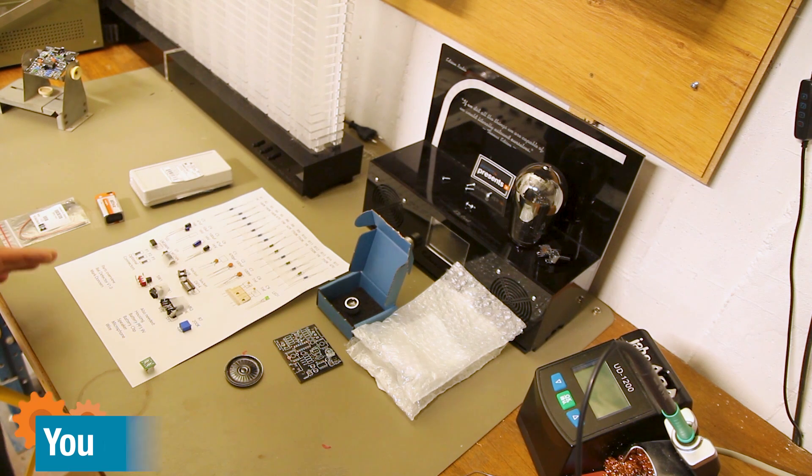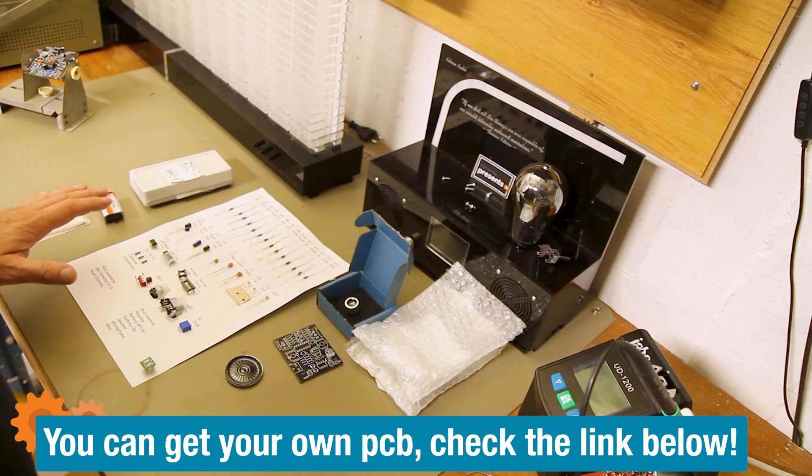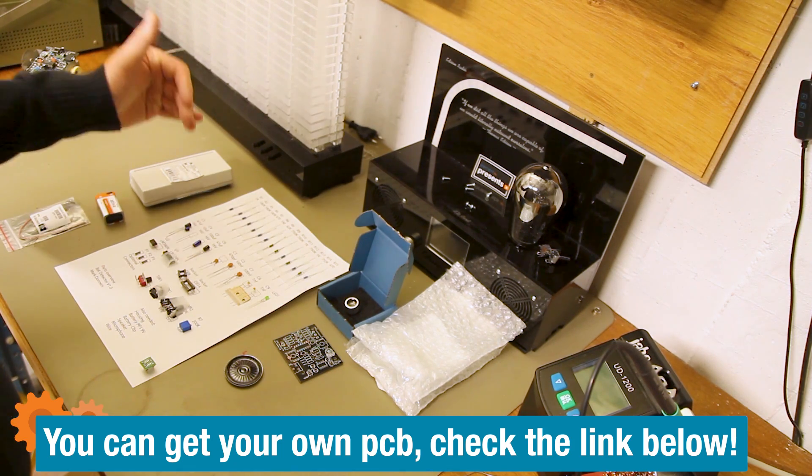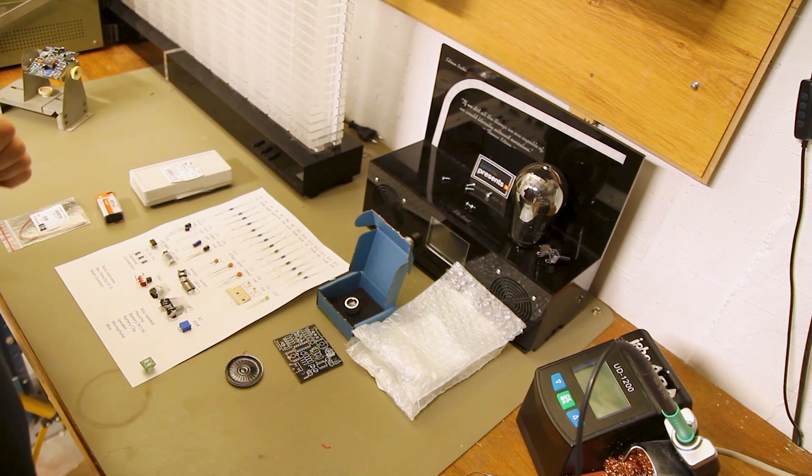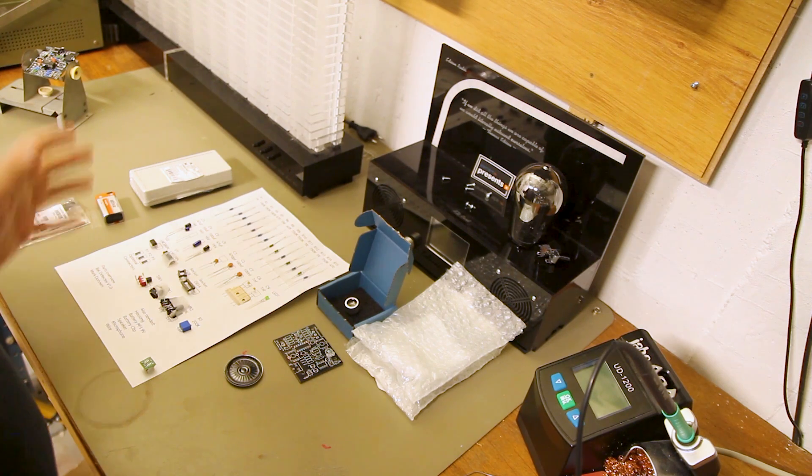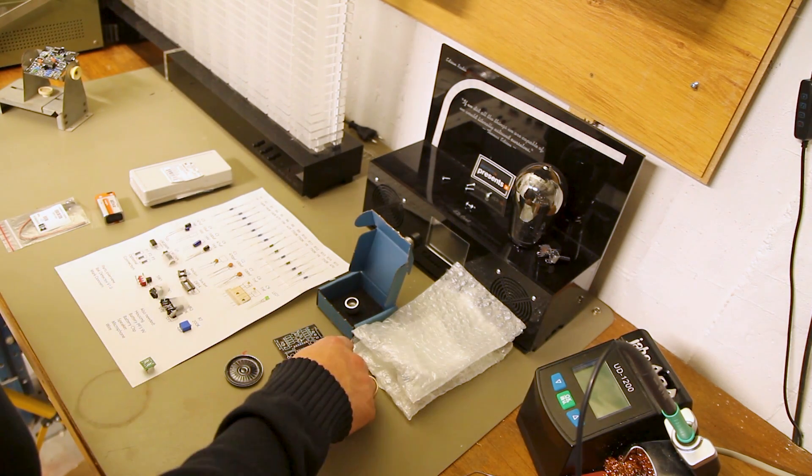Before I start assembling my PCB I put all the components on a single sheet and sort them by resistor, capacitor, and value. So it's easy to pick and place. I can just place all the components on the PCB and then solder it later.